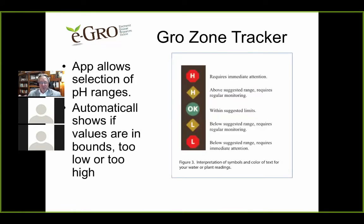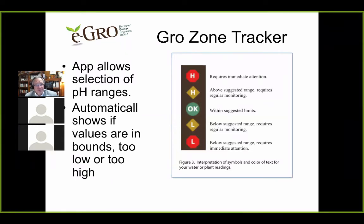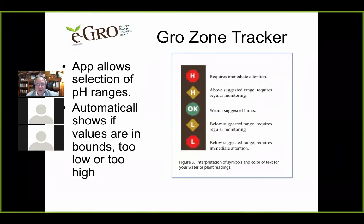When you come in, you select your crop and the ranges you're targeting for pH and EC. The app auto-fills those values. When you put in your measured values, a green circle indicates you're okay, yellow means caution high or caution low, and a stop sign means too high or too low. Ideally you stay in the green; if it goes to yellow, that's when you make corrective changes to get back into the green zone.